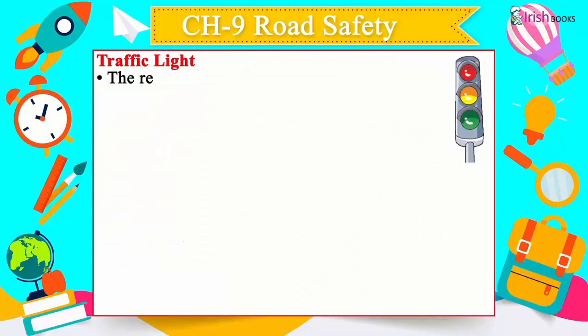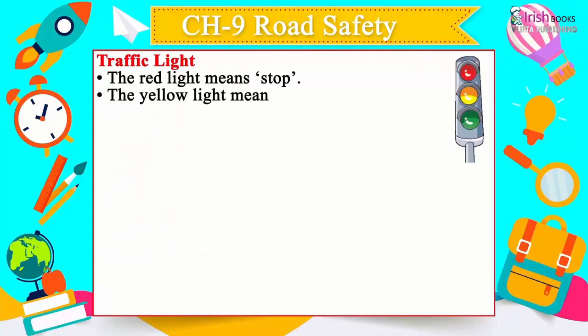Traffic lights. The red light means stop. The yellow light means wait. The green light means go.